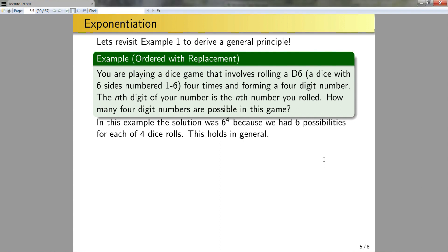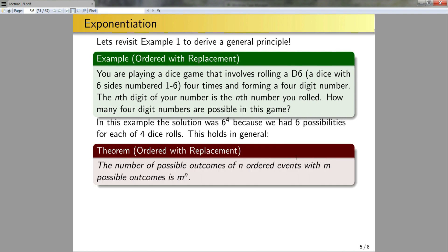This idea holds in general. Theorem, I'm just going to name it ordered with replacement. You don't have to refer to this theorem via this name. You can just use the theorem by saying this is obviously true. The number of possible outcomes of n ordered events with m possible outcomes for each one of the events is m to the n.